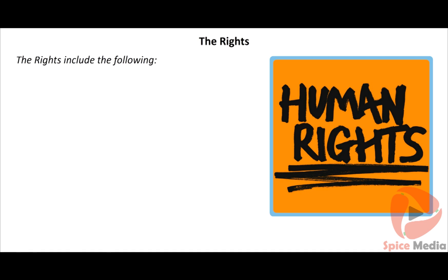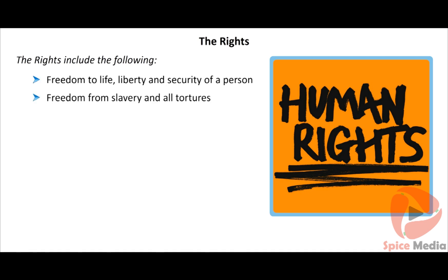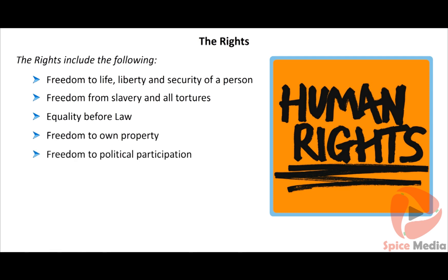These rights include: freedom to life, liberty, and security of a person; freedom from slavery and all tortures; equality before law; freedom to own property; freedom to political participation; freedom to marry; equality and social protection of all children; and special care to motherhood and childhood.